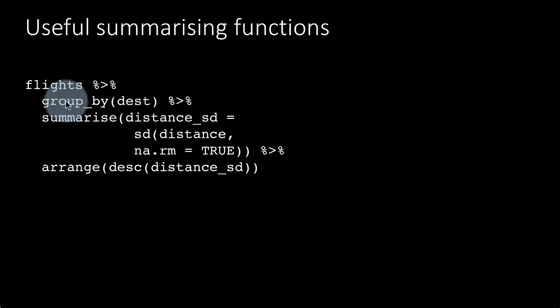So here we are saying flights group by destination, summarize distance_sd equals sd distance na.rm equals true, that is the standard deviation of the distance to each destination because we have group by destination, and then we are arranging it by descending order of the standard deviation to the destination.